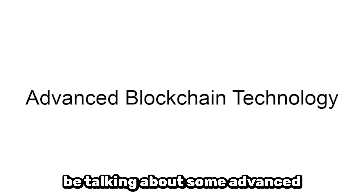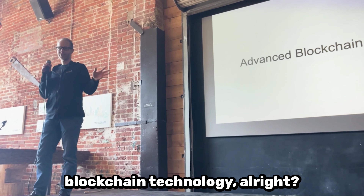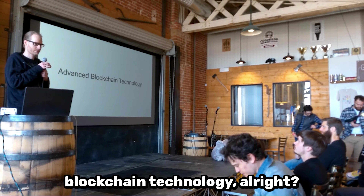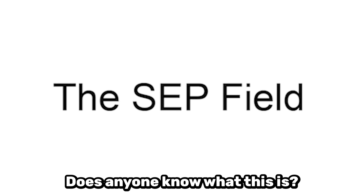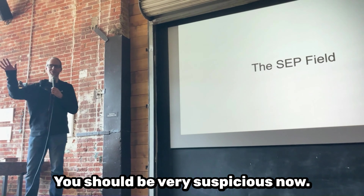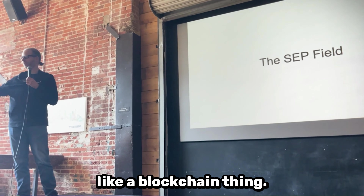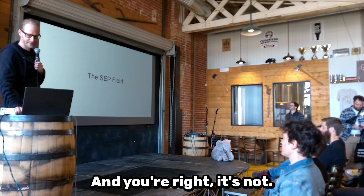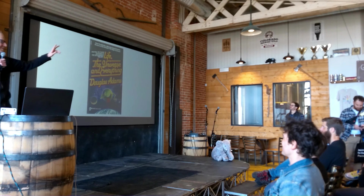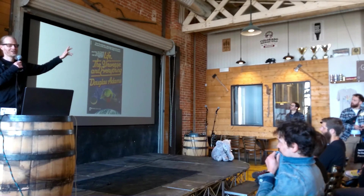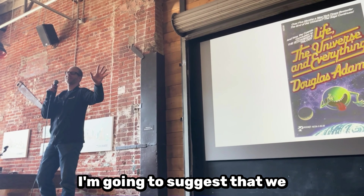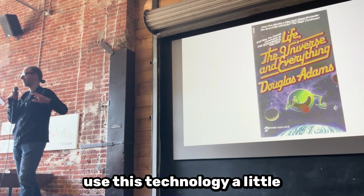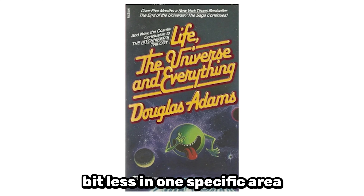Getting into the meat of this presentation, I'm going to be talking about some advanced blockchain technology. What is it? It's the SCP field. The SCP field is the Somebody Else's Problem field — from the Douglas Adams book. I'm going to suggest that we use this technology a little bit less in one specific area that I'm going to talk about. Everyone uses this; we all build on top of towers of abstraction.